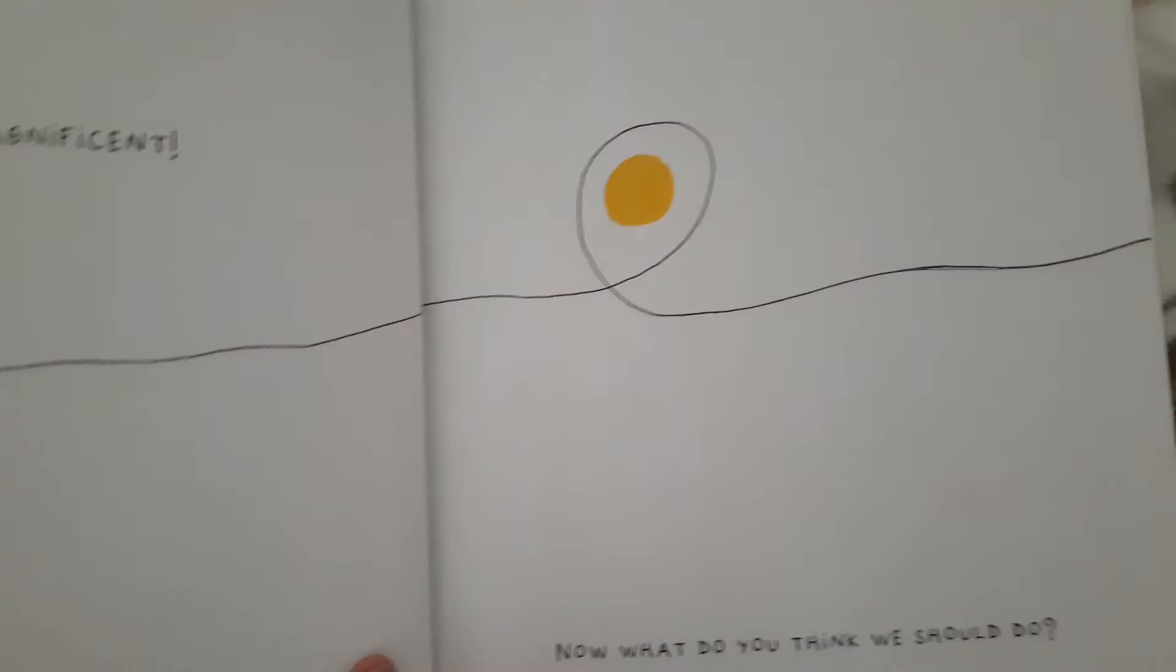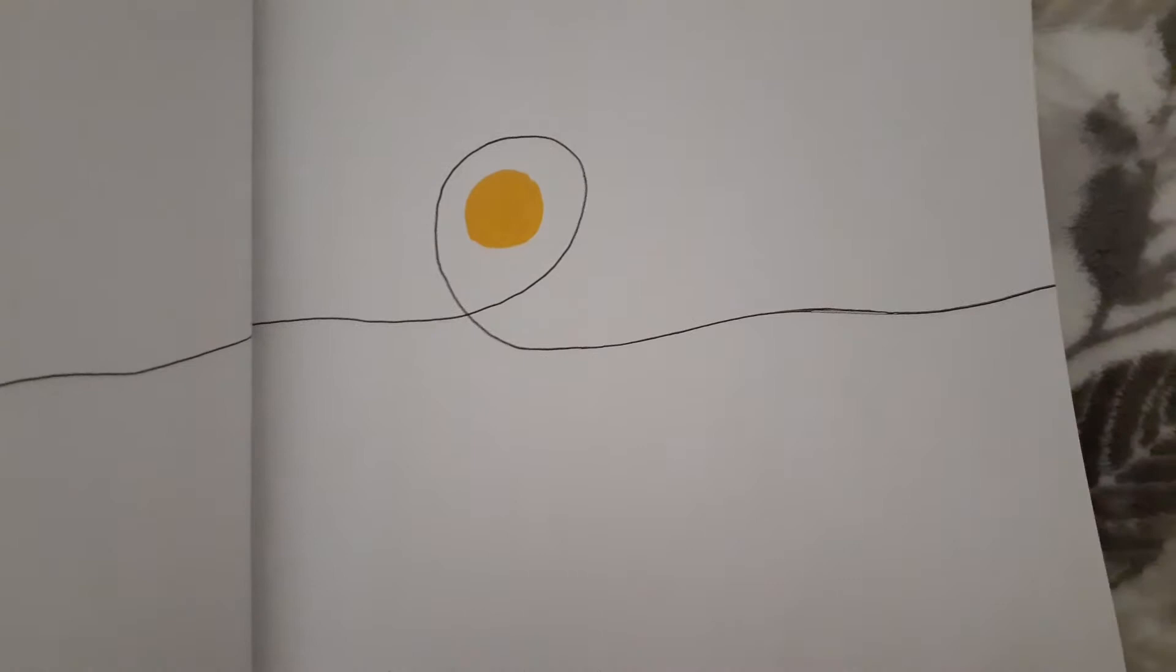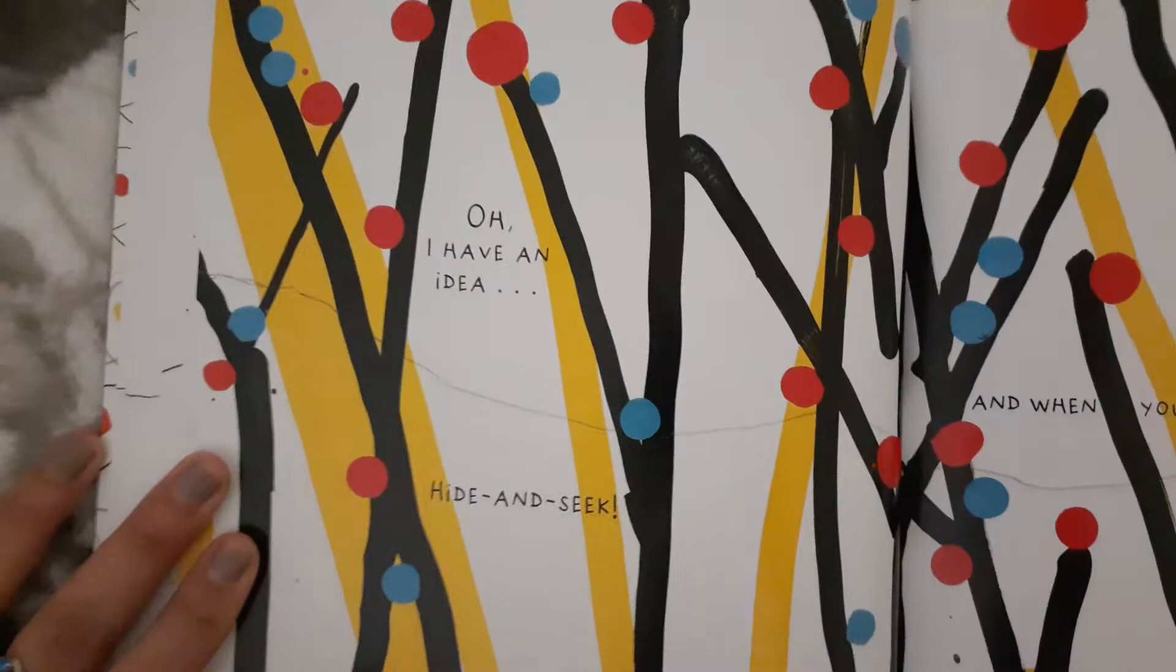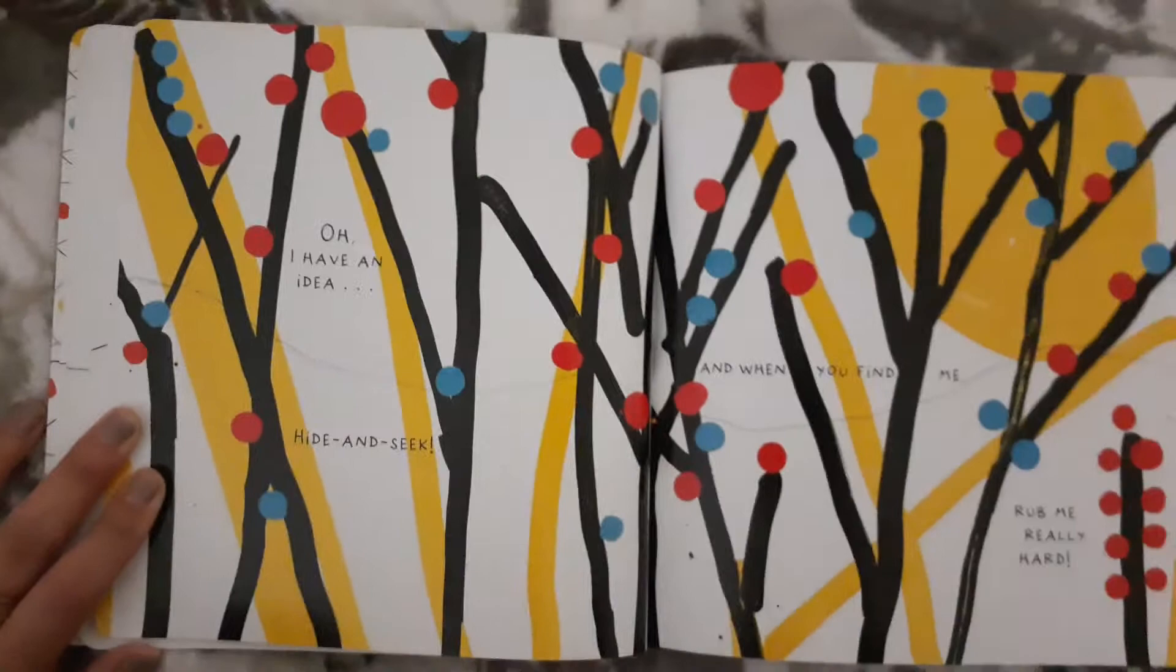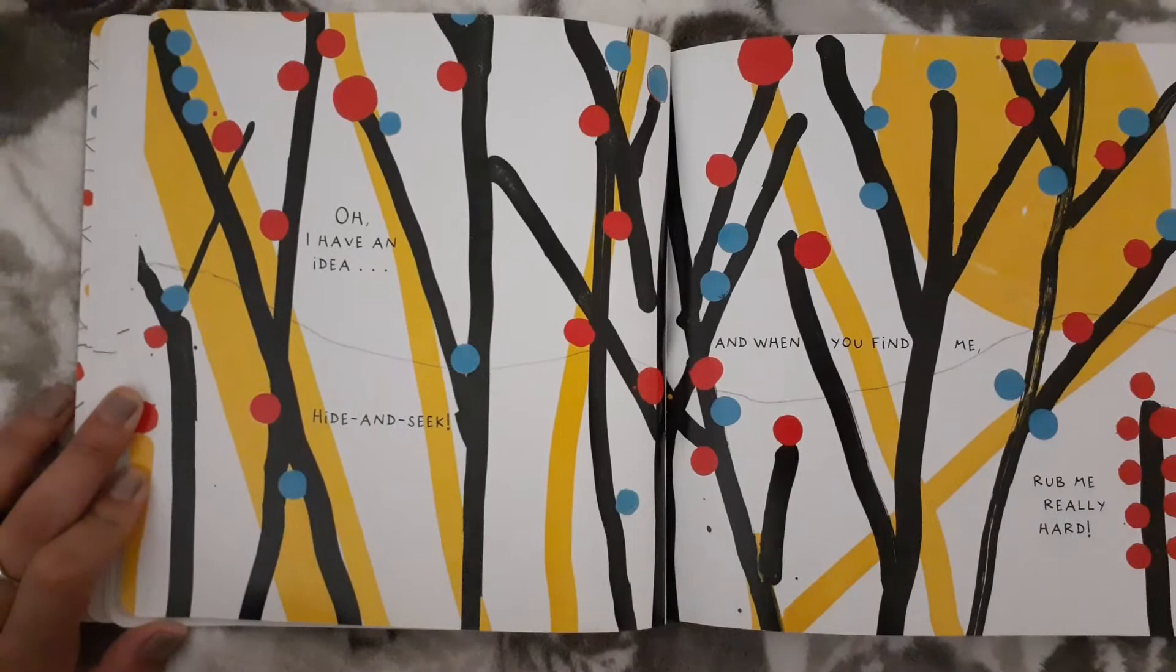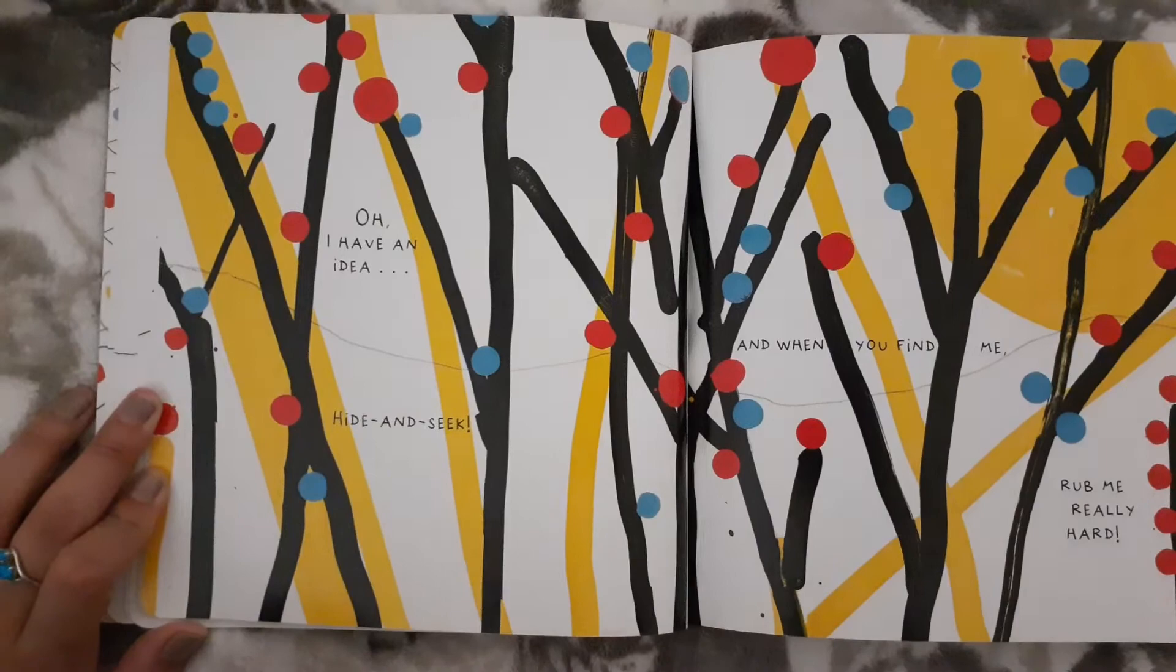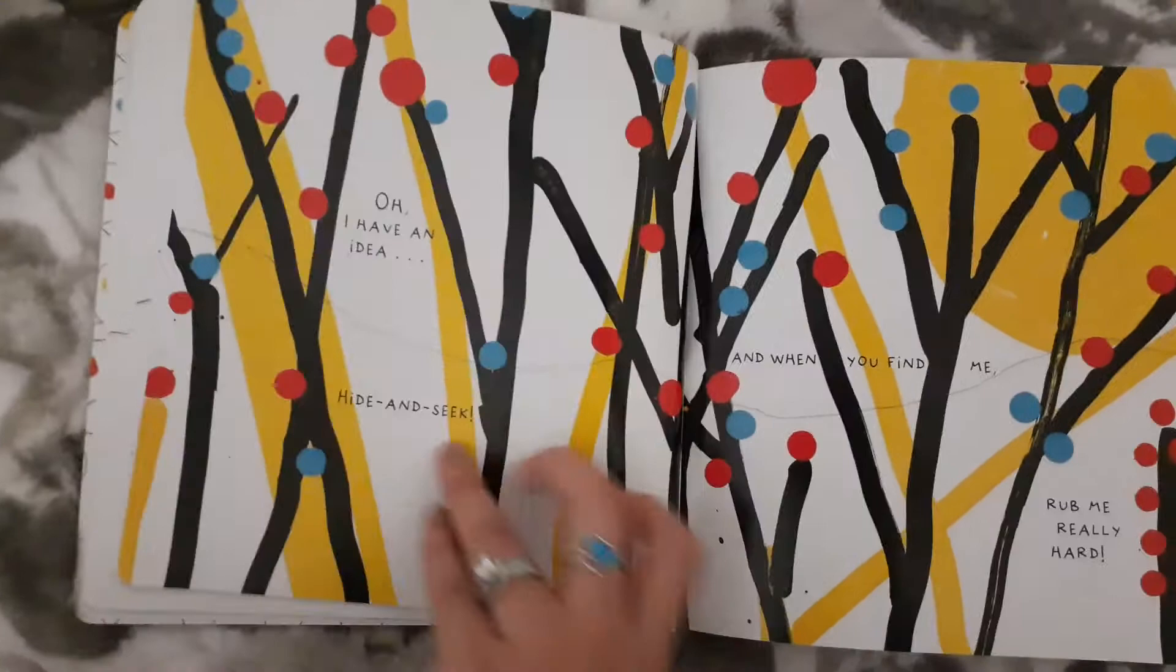Now, what do you think we should do? Oh, I have an idea. Hide and seek. And when you find me, rub me really hard. You're looking for the yellow dot. The yellow circle. You find it? Do you see it? See where he was hiding. Bravo.